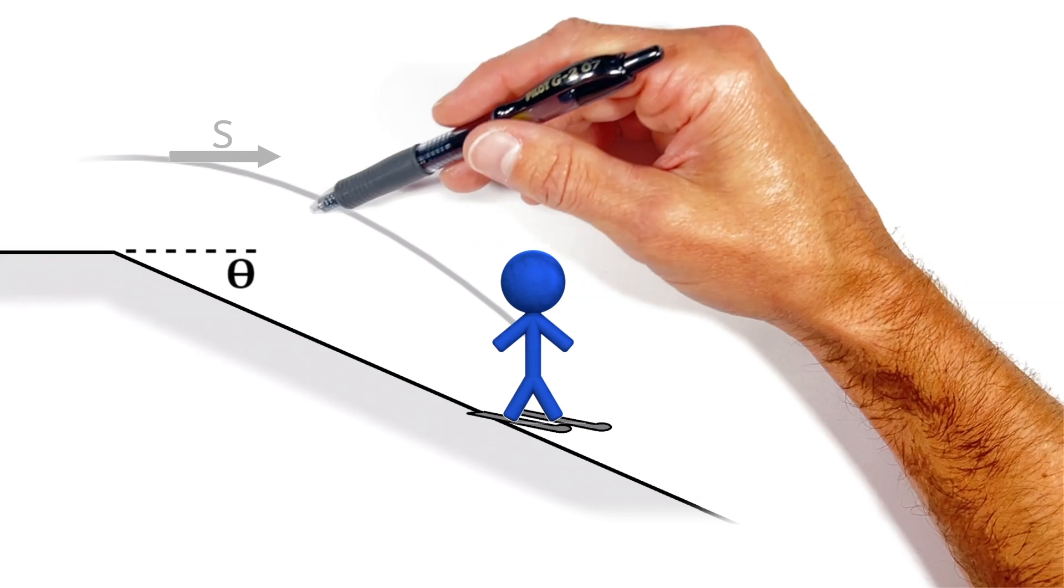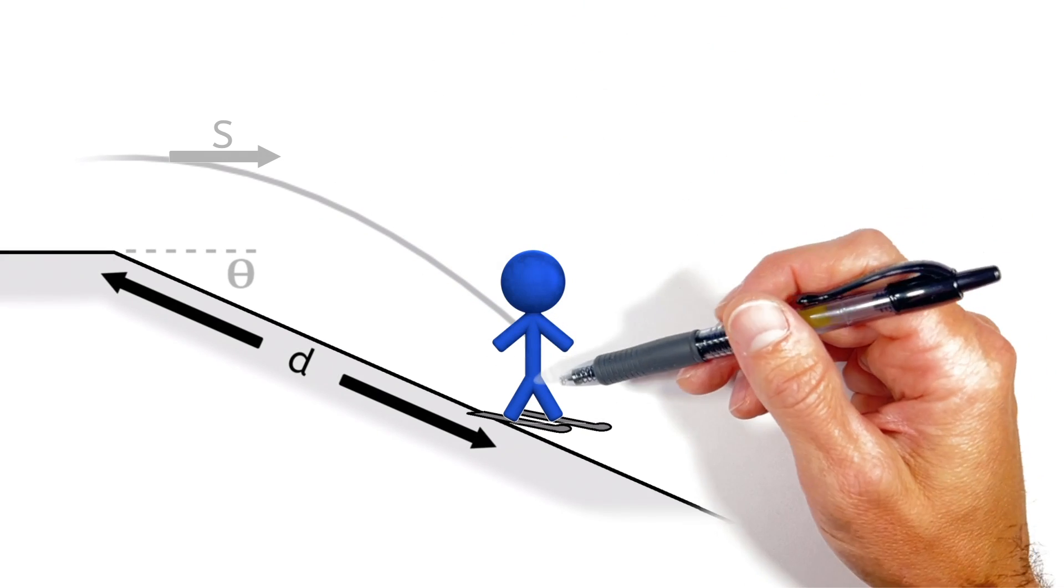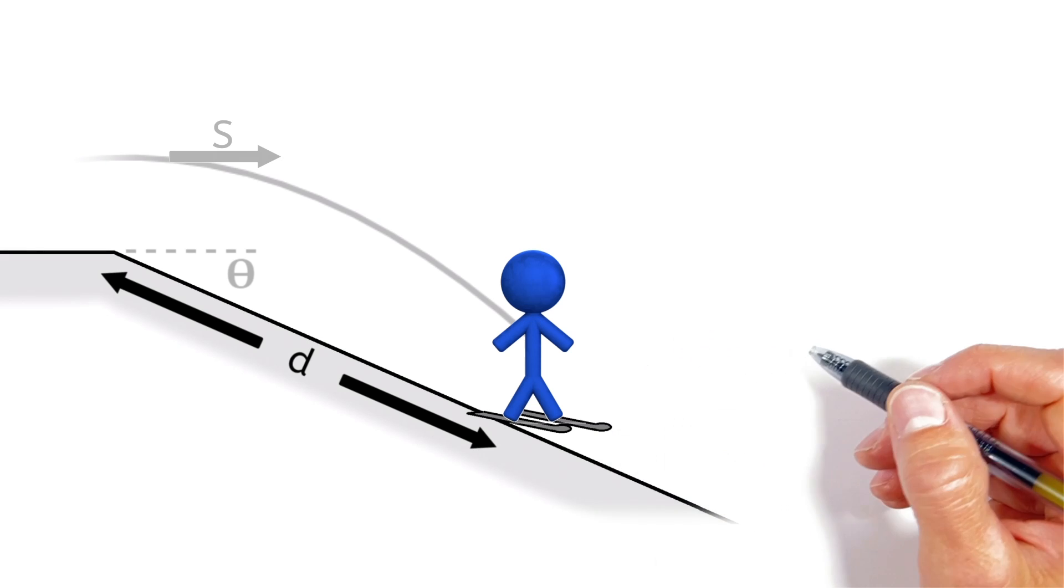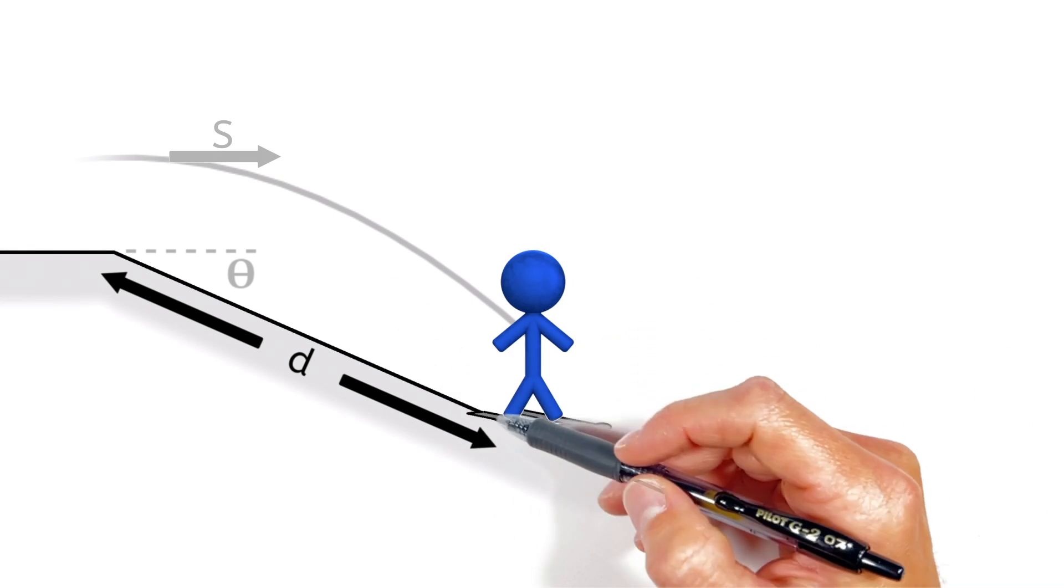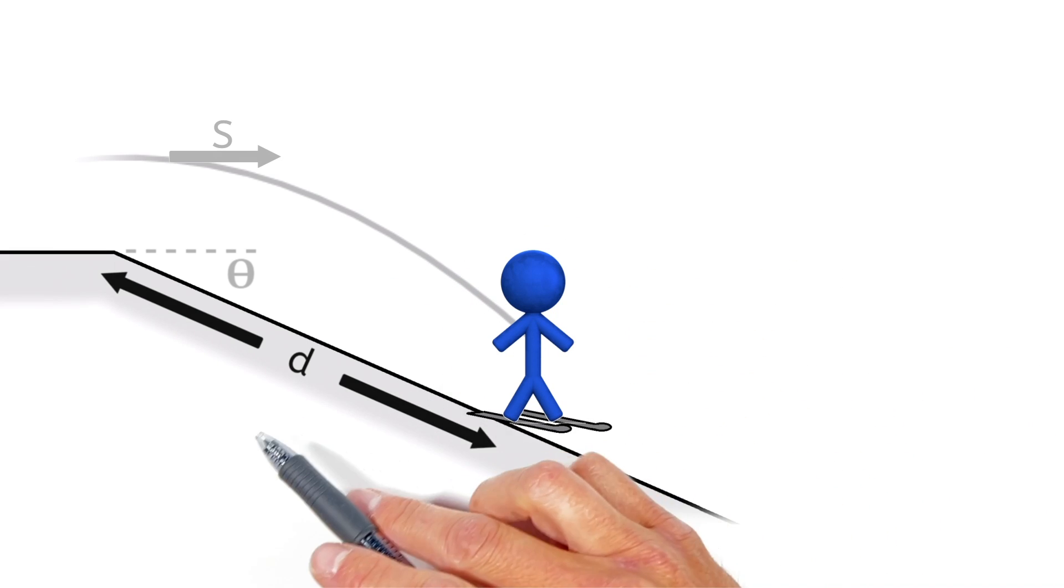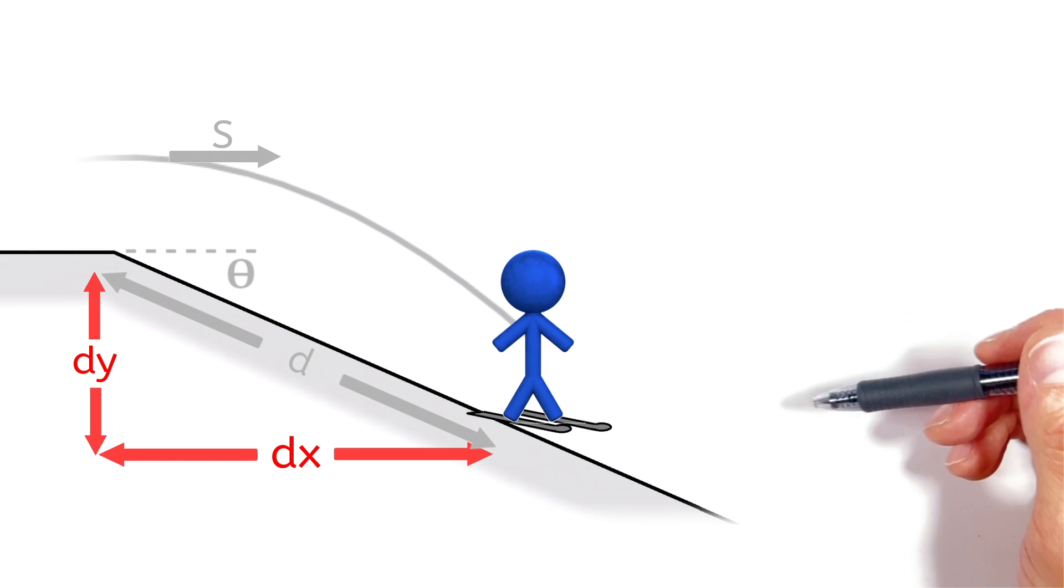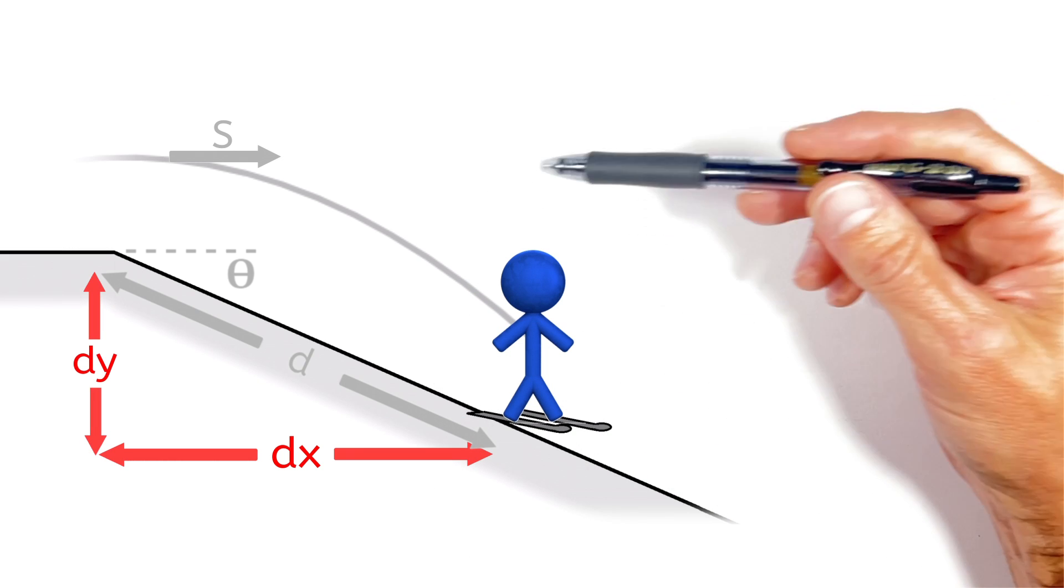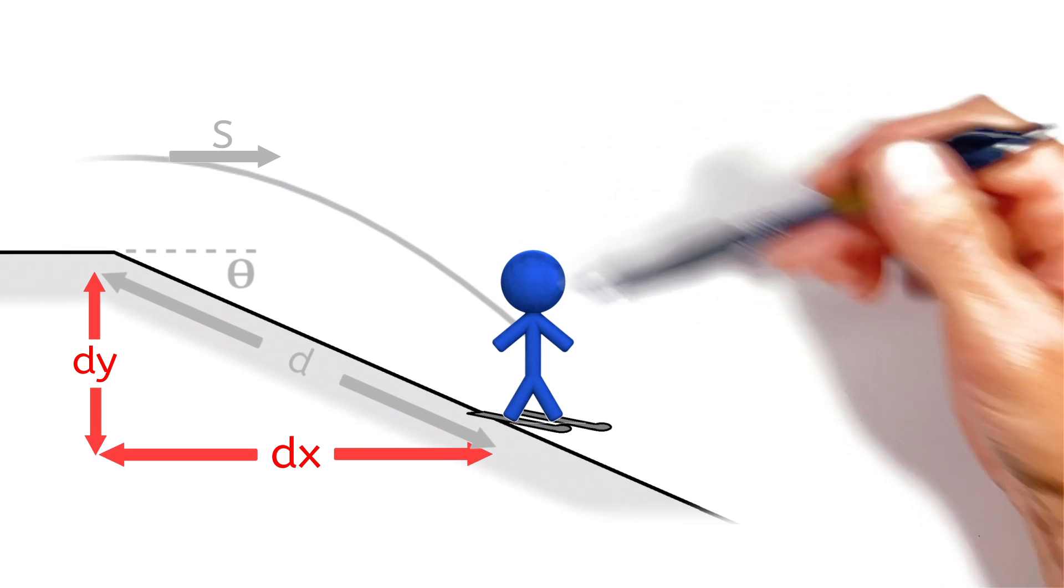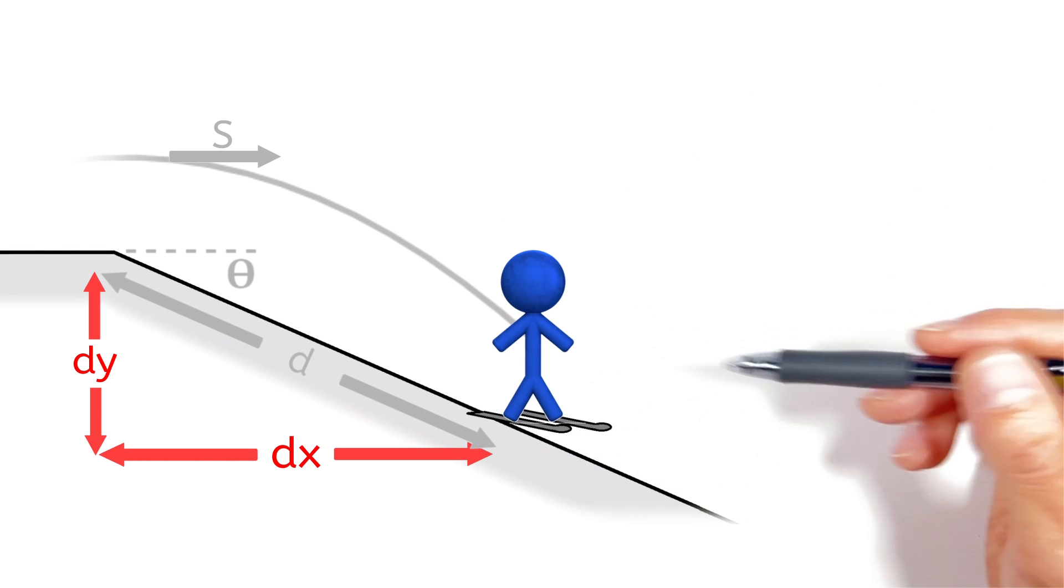You see, what we're trying to solve for is the displacement of the skier down this hill. But the issue is that this displacement is not entirely limited by the motion in the x-axis or the y-axis. The motion is really limited by the relationship or even the ratio of those two values depending on how steep the hill is.